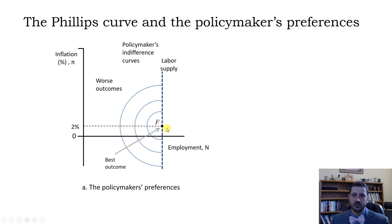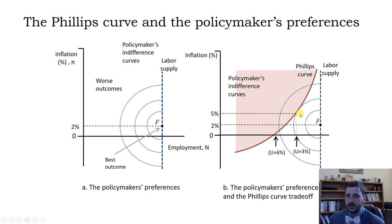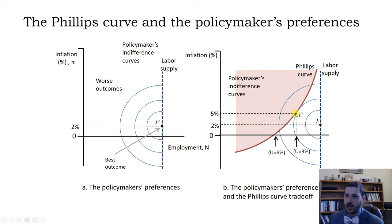The best outcome is where everybody is working, everybody has a job, and we have low but steady inflation. As noted, we can't always get there because of the Phillips curve. If we were at point F, the bargaining gap would be too high and we'd end up with higher inflation. At that point of higher inflation, we'd be willing to trade off some unemployment, so point C might be the optimal outcome — where the Phillips curve is just tangent to the policymakers' preferences.